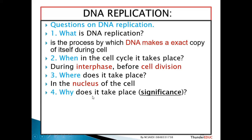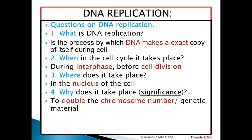Why does DNA replication occur? The significance of DNA replication is the same as asking why it takes place. It takes place to double - you must use the word 'double' - to double the chromosome number or to double the genetic material, so that each cell can obtain an exact number of chromosomes.